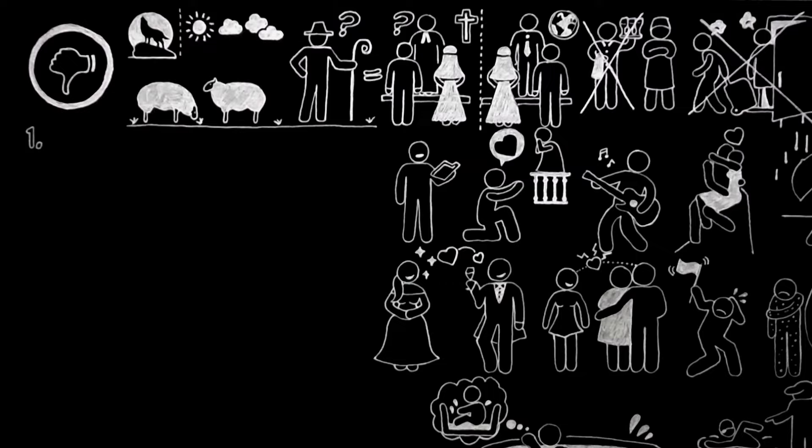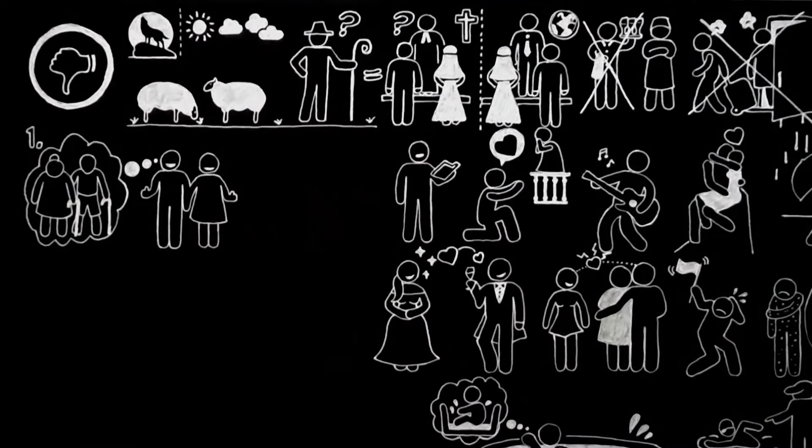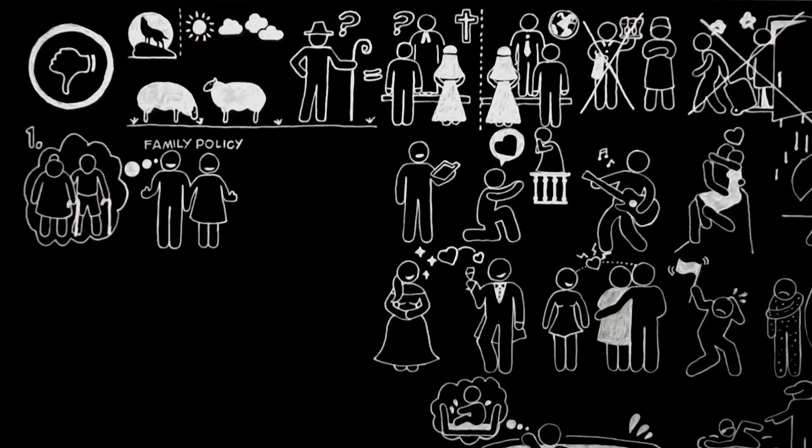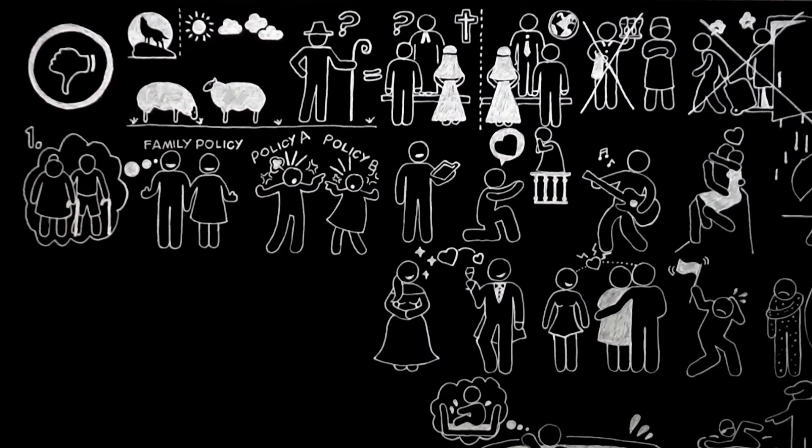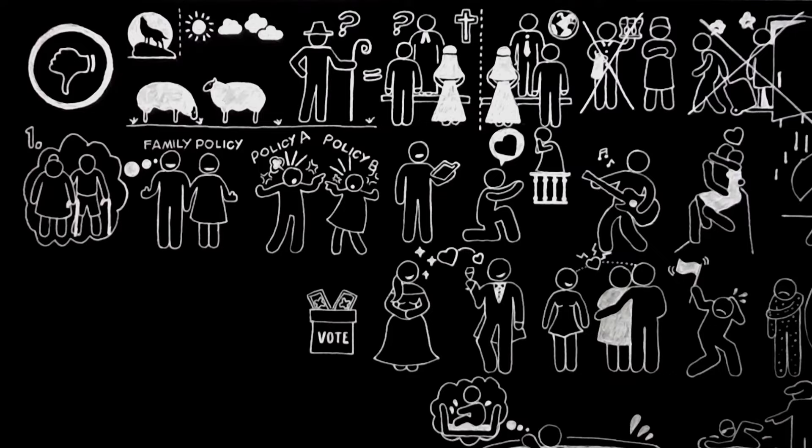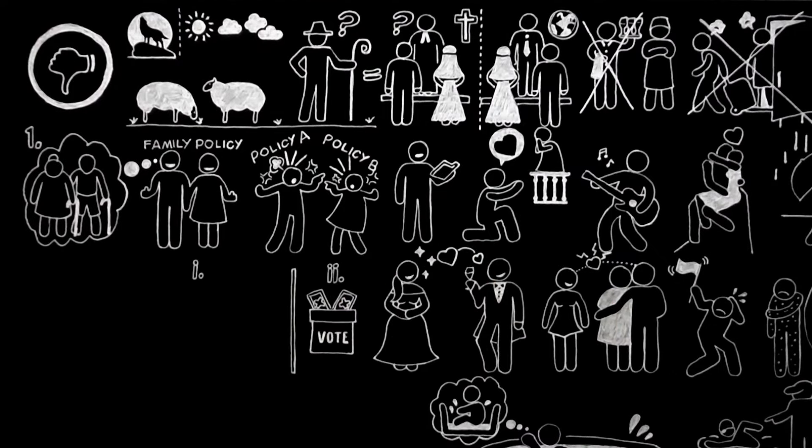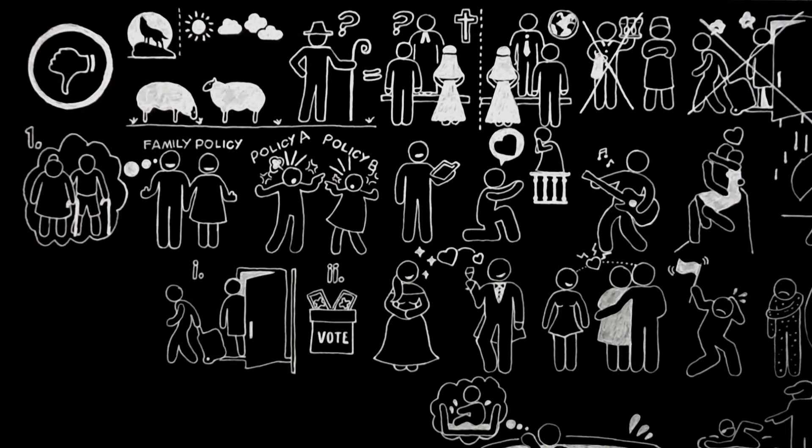One, the need for some head follows from the idea that marriage is permanent. Of course, as long as the husband and wife are agreed, no question of a head need arise and we may hope that this will be the normal state of affairs in a Christian marriage. But when there is a real disagreement, what is to happen? Talk it over, of course, but I am assuming they have done that and still failed to reach agreement. What do they do next? They cannot decide by a majority vote, for in a council of two there can be no majority.